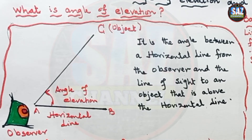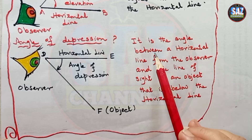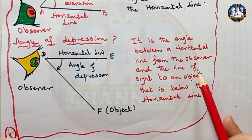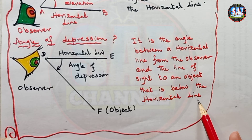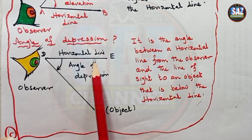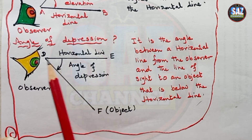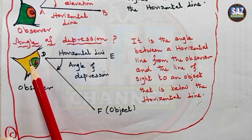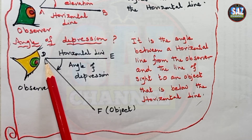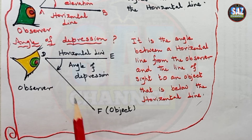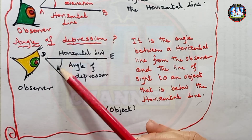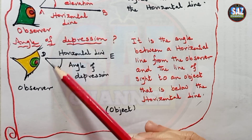The angle of depression is the angle between the horizontal line from the observer and the line of sight to an object that is below the horizontal line. Here, this is the horizontal imaginary line and this is the position of the observer. The observer is standing at the top of some building and looking at some object which is below this horizontal. The angle formed between these two is called the angle of depression.